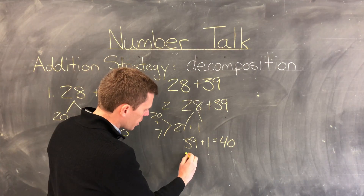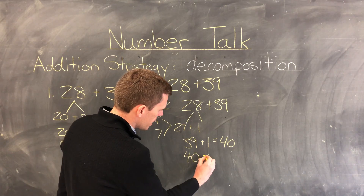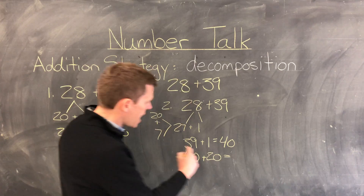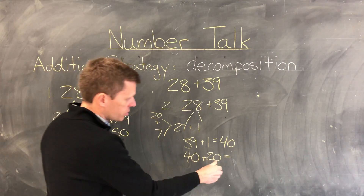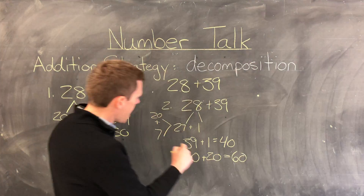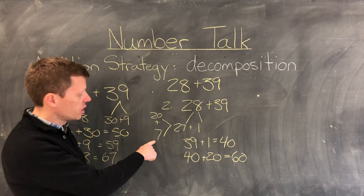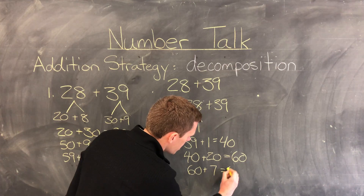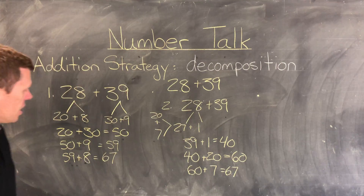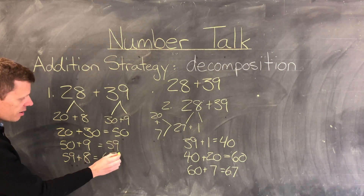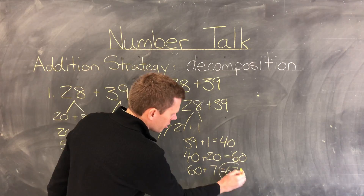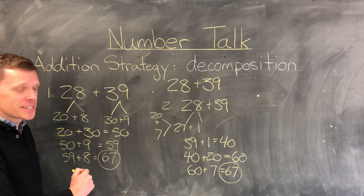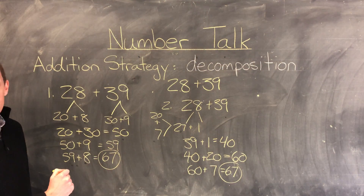Now I can add these parts together. Continuing with my 40, I add the 20 and that equals 60. Then I have this last part which is 7, and 60 plus 7 equals 67. The good news is both solutions are the same, which means I'm probably on the right track with my addition.